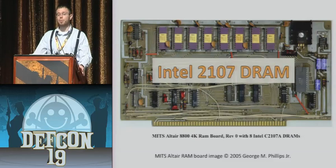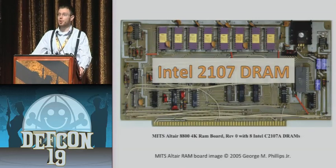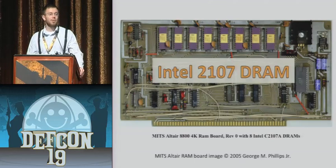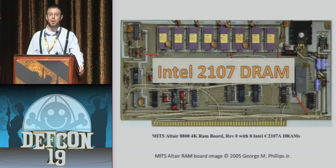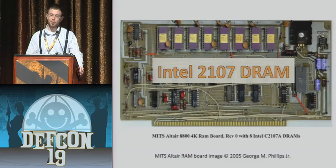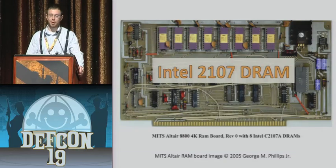In 1978, researchers May and Woods from Intel discovered that these chips were catastrophically failing. The problem was traced back through the supply chain, and they found that Intel had built a chip fab downstream from an old uranium mine. During fabrication, these chips would be contaminated with radioactive alpha emitters. When the chip was running software — possibly MITS Altair Basic — an alpha particle would get emitted, shift some ones to zeros, and a perfectly running application would crash.